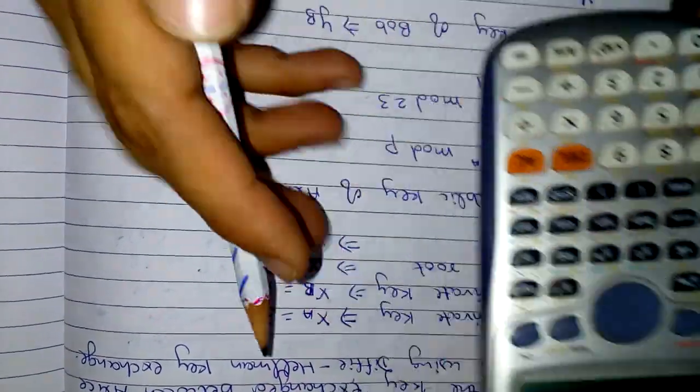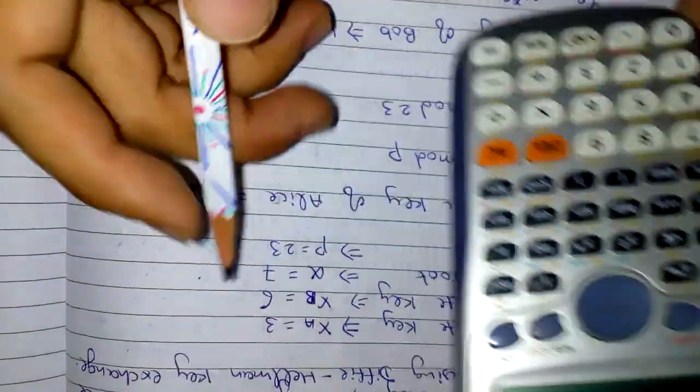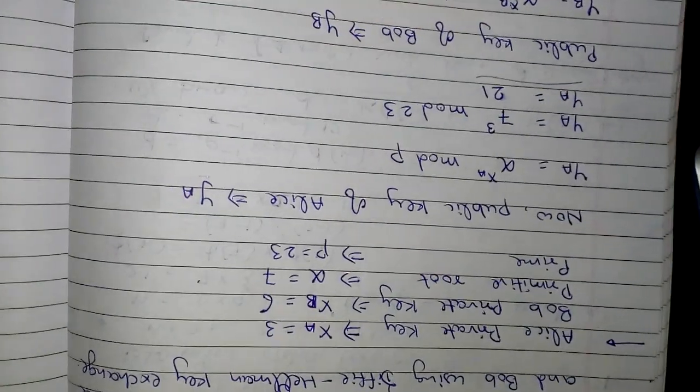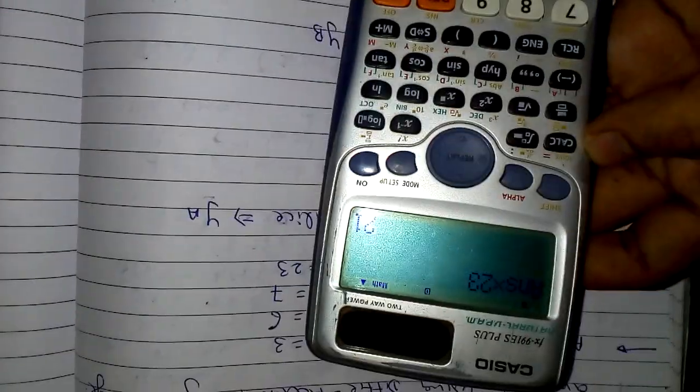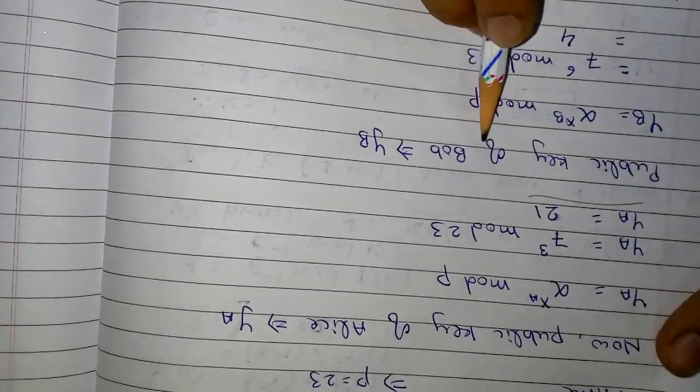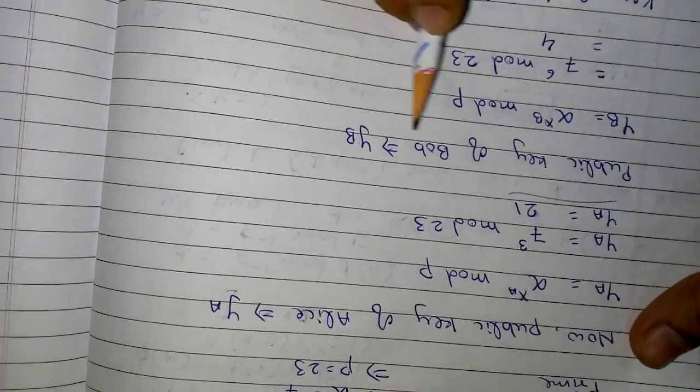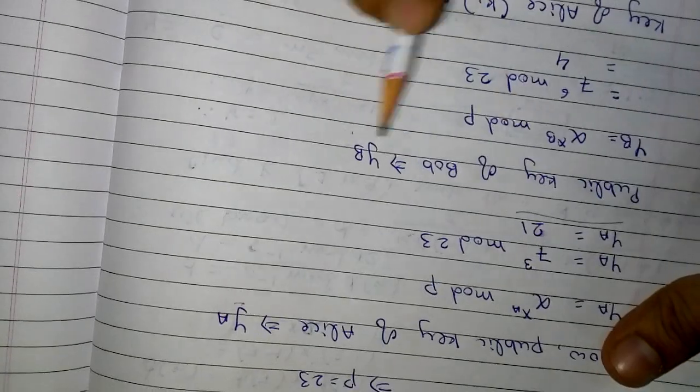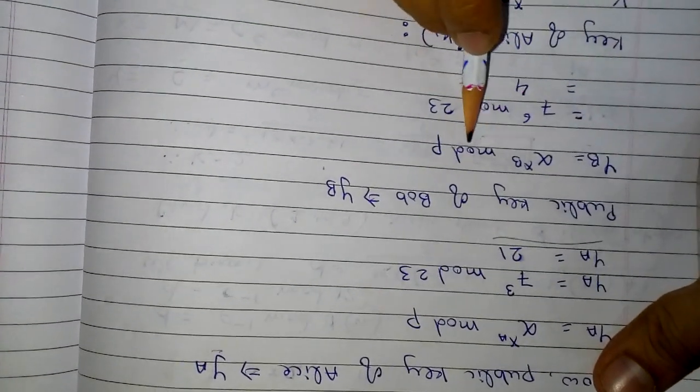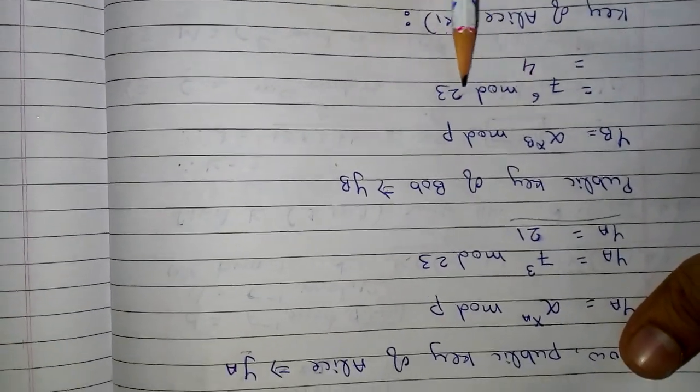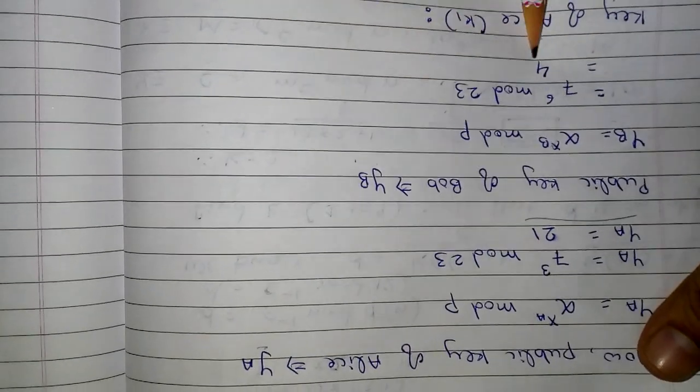So ya is 21. Next, Bob's public key, let's call it yb. So yb is equal to alpha raised to xb mod p, which means 7 raised to 6 mod 23. When you solve it, you will get the answer 4.